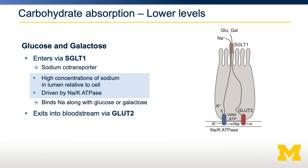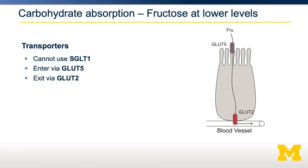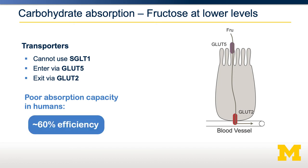You may notice that SGLT1 works on glucose and galactose, but not fructose — SGLT1 has very low affinity for fructose. So what happens with fructose at low levels? There is a high-affinity passive transporter called GLUT5 present on the apical membrane of enterocytes. Fructose can be transported from the lumen into the enterocyte via GLUT5 and then into the blood via GLUT2. However, because this is still passive transport, there's no concentrating mechanism to absorb more fructose than the gradient allows. As a result, we have a relatively poor ability to absorb fructose — generally about 60% efficiency — relative to glucose and galactose, because there is no active transport mechanism for fructose.